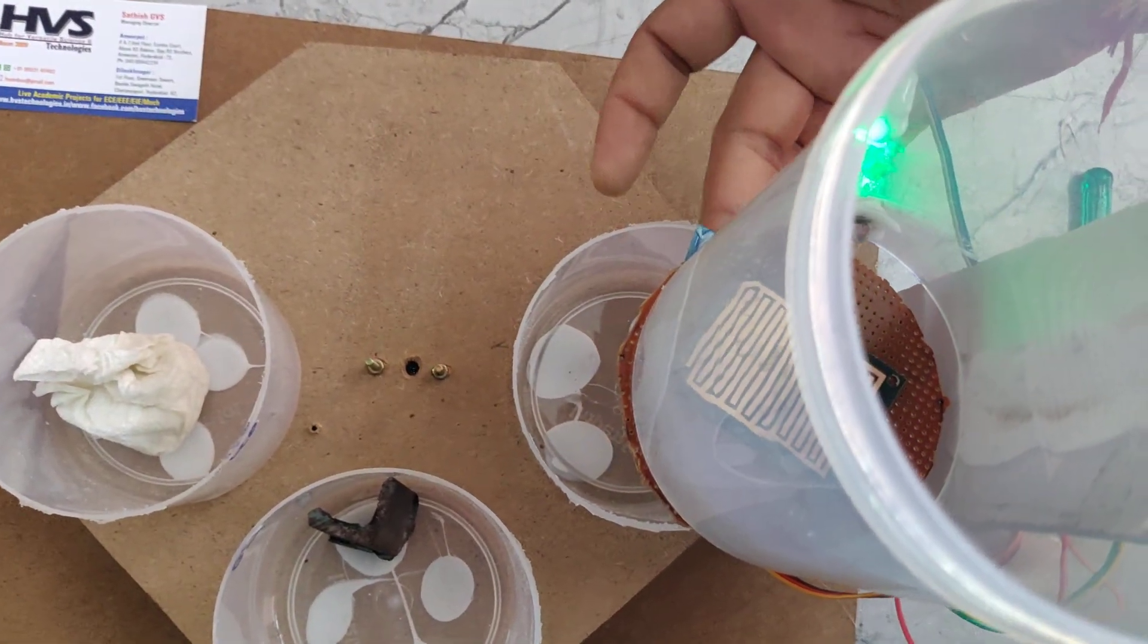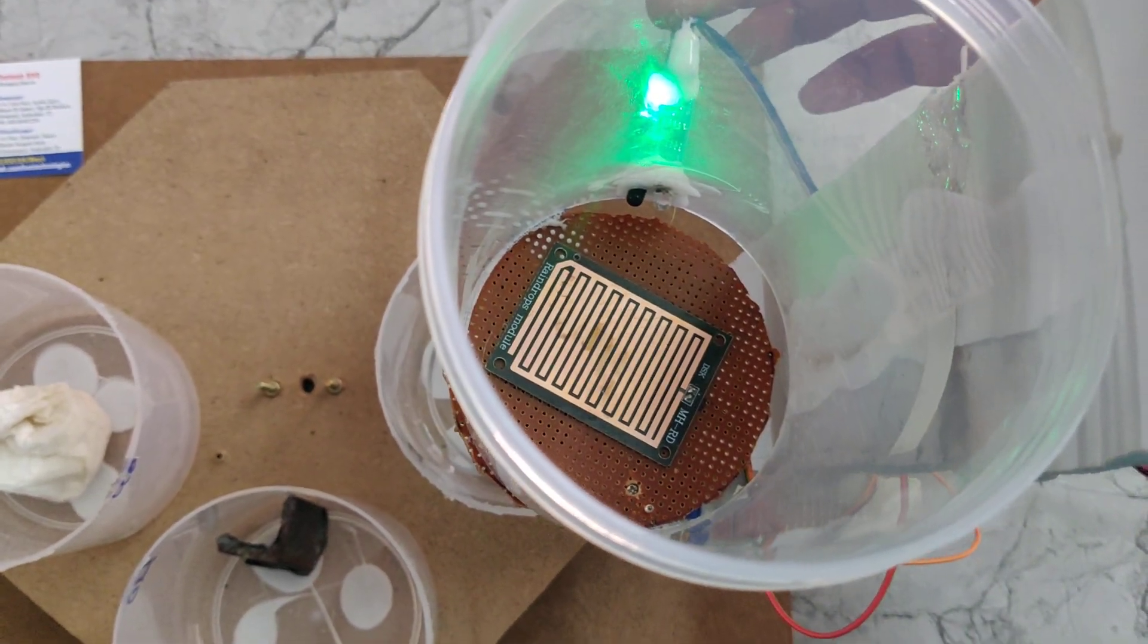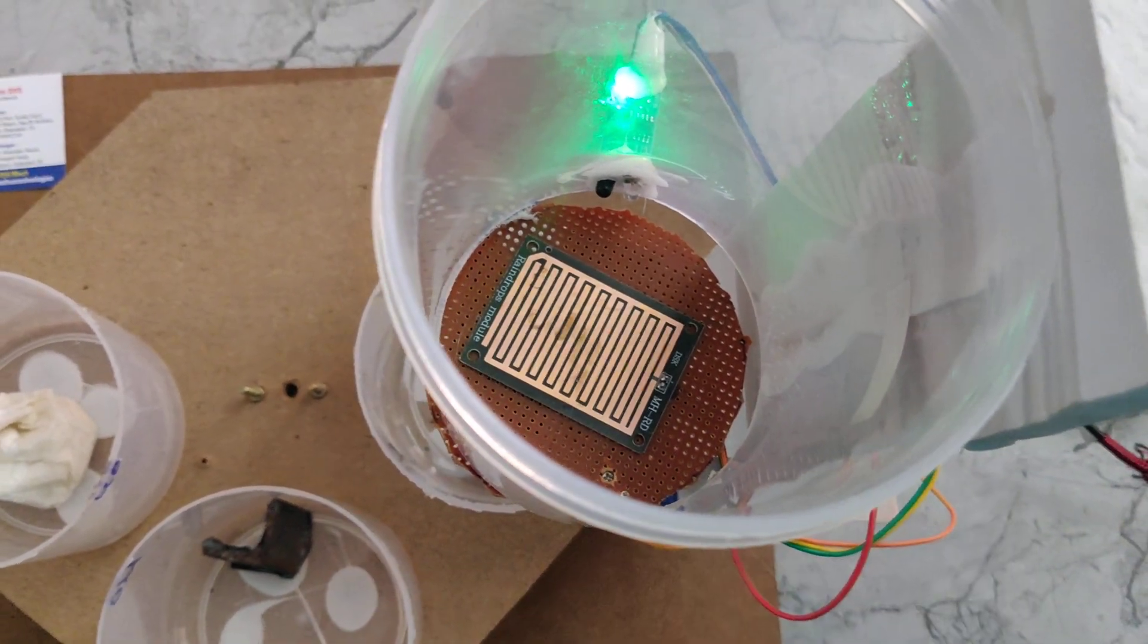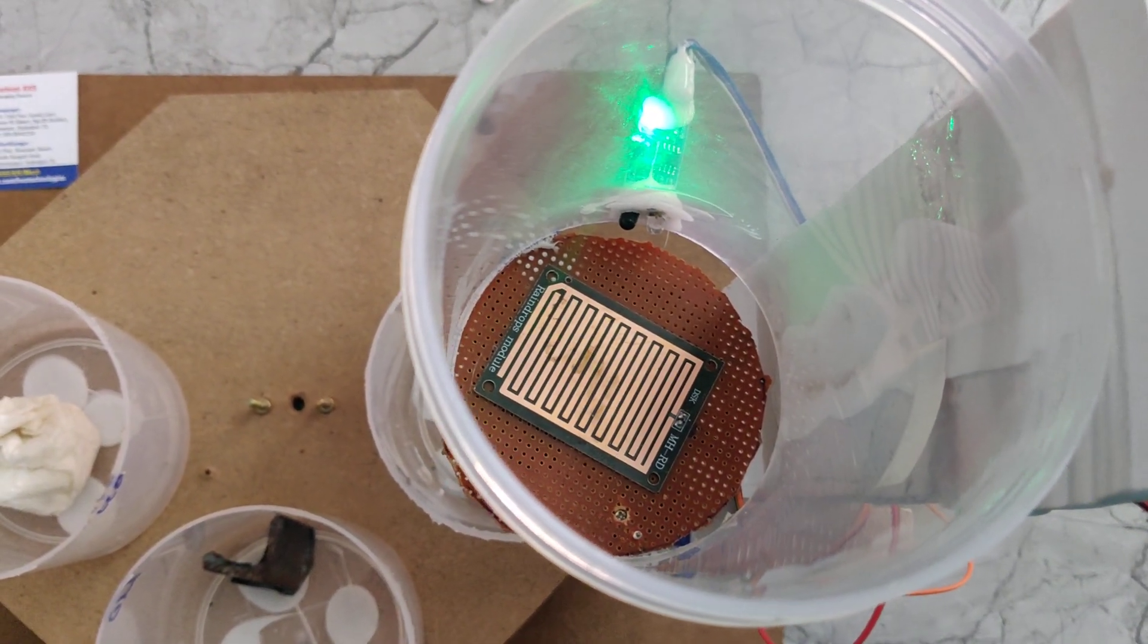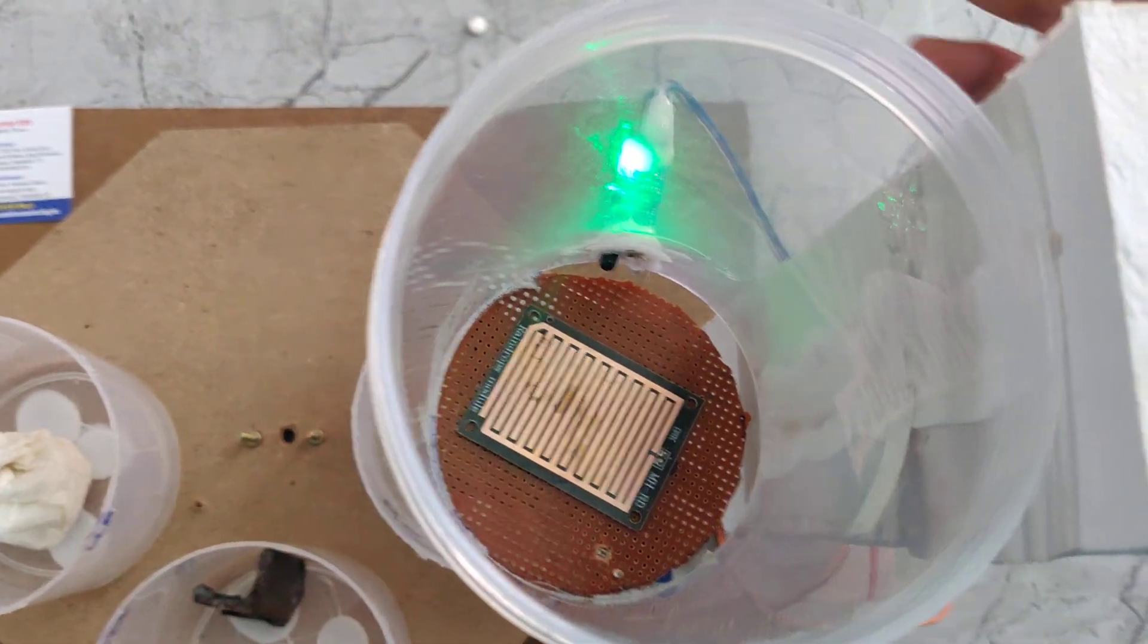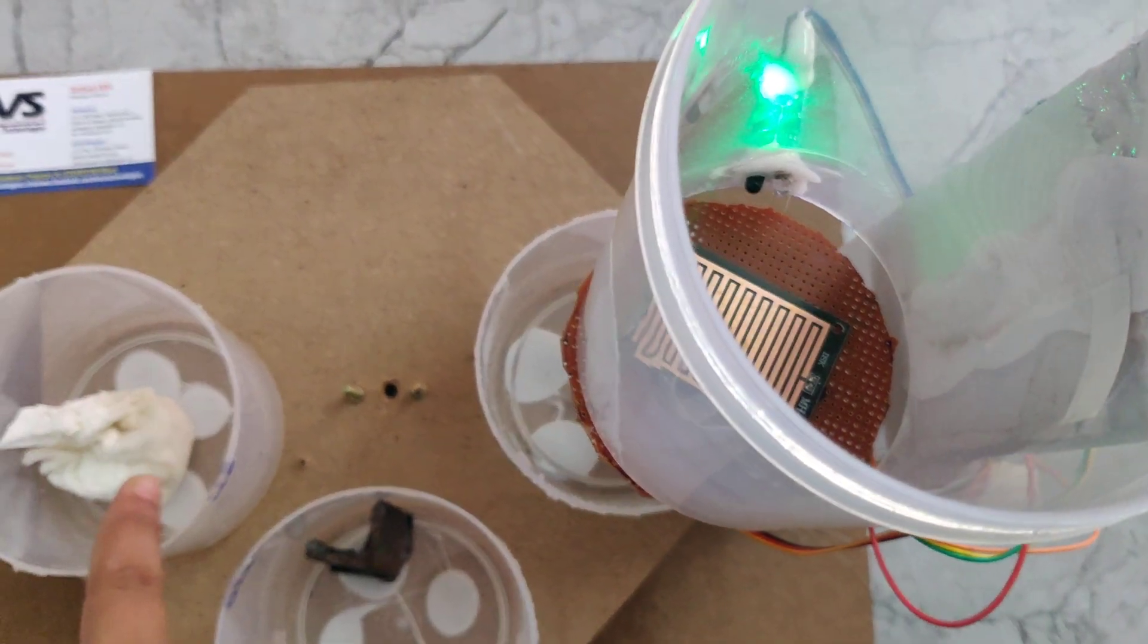Here is a metal sensor, so that metal sensor will detect and IR sensor will detect. So at that time, this metal box will come here. If I place wet waste, the wet sensor will be detected and IR sensor will be detected. That's why that wet box will come here.